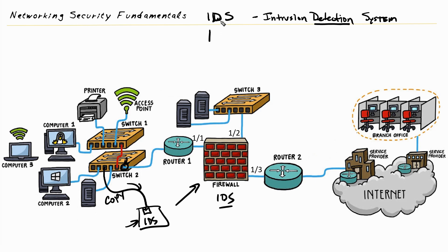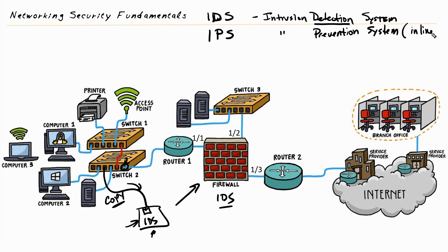If we configure a device so it can stop the attack, that would be implemented as an IPS — Intrusion Prevention System. An IPS must not only see the attack but also prevent it from getting further into the network. For IPS, we can't just send a copy of data to the device because if it's not inline, it can't stop the attack. IPS pretty much means the device is inline with the traffic it's analyzing.